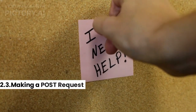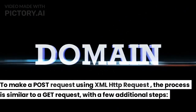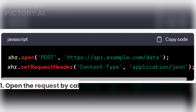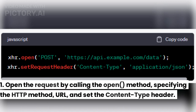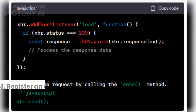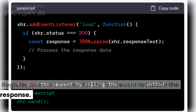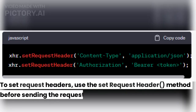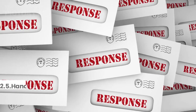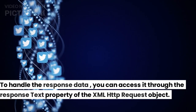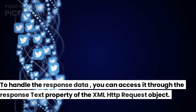To make a POST request using XMLHttpRequest, the process is similar to a GET request with a few additional steps: open the request by calling the open() method, specifying the HTTP method, URL, and set the content type header; create a payload of data to send in the request body; and register an event listener for the load event to handle the response. To set request headers, use the setRequestHeader() method before sending the request. To handle the response data, you can access it through the responseText property of the XMLHttpRequest object.